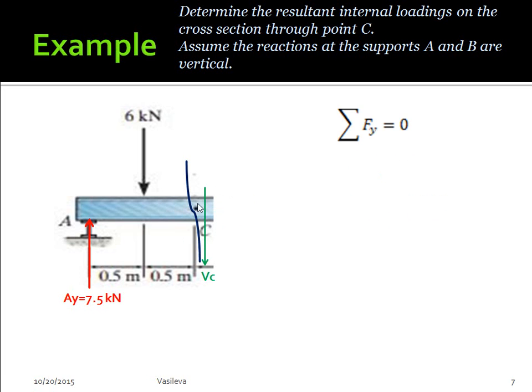If we do the sum of the forces in the Y direction, we have positive AY, negative 6 kilonewtons, and negative VC. VC ends up to be 1.5 kilonewtons. And once again, because it is positive, it means that the way we drew it is the correct convention. So it should be 1.5 kilonewtons pointing down. If VC had come out to be negative 1.5 kilonewtons, it means that our drawing is the opposite of the actual way it should be drawn. But it's not. So 1.5 kilonewtons pointing down.